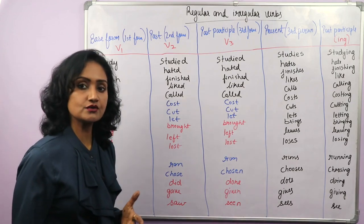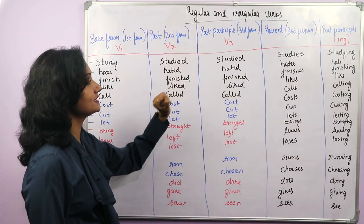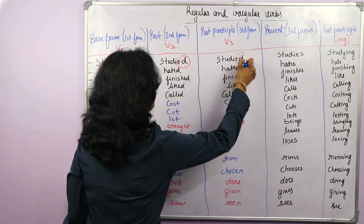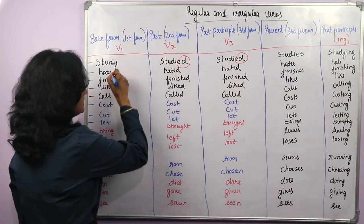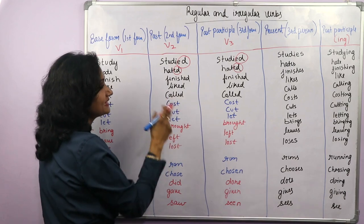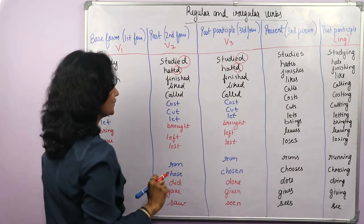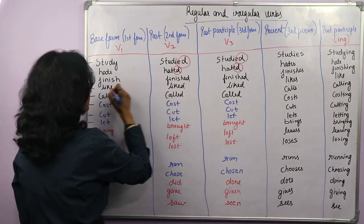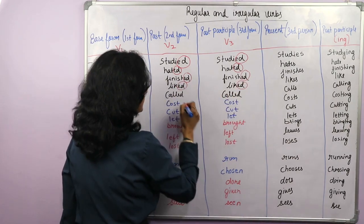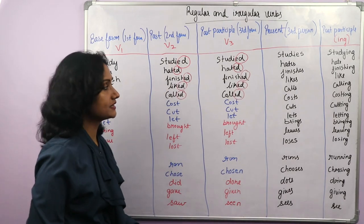Regular verbs are very easy to understand because they follow a pattern — you just put ED at the end. Like study, studied, studied; hate, hated, hated — E is already there so you just add D. Regular verbs end with ED in V2 and V3. Finish, finished, finished; like, liked, liked; call, called, called. These are called regular verbs and very easy to remember because they follow a pattern.